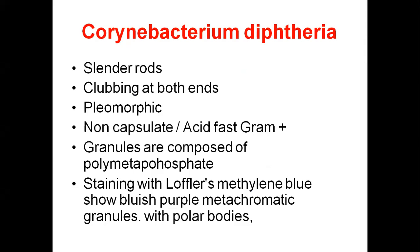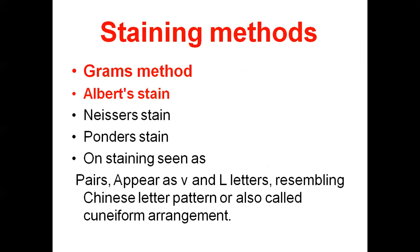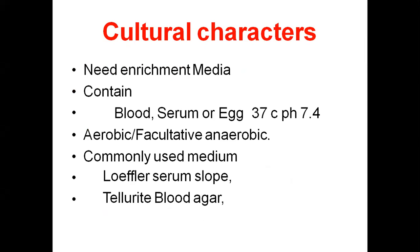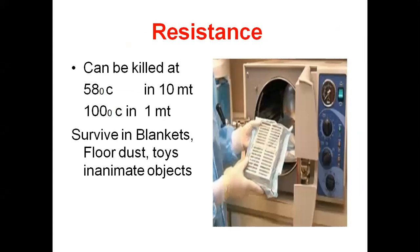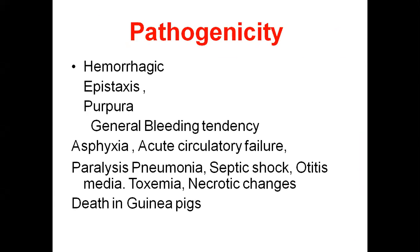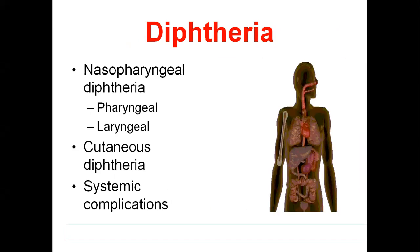We then moved to further morphological characteristics, staining technique, cultural characteristics, toxins, resistance, and pathogenicity. After that, we continued with pathogenicity, particularly in the form of signs and symptoms according to the system. For example, nasopharyngeal diphtheria — pharynx and larynx — what will be the signs and symptoms, then cutaneous level, then systematic complications.